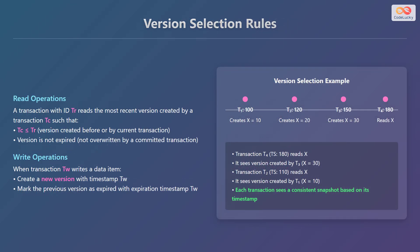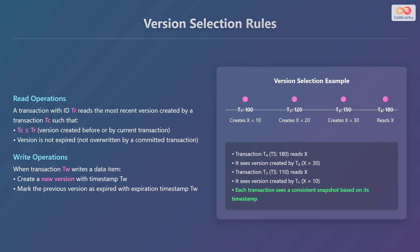Here are the rules for version selection in Multiversion Concurrency Control. For read operations, a transaction with ID TR reads the most recent version created by a transaction TC, such that TC is less than or equal to TR, meaning the version was created before or by the current transaction, and the version is not expired or overwritten by a committed transaction. For write operations, when a transaction TW writes a data item, it creates a new version with the timestamp TW and marks the previous version as expired with the expiration timestamp TW.